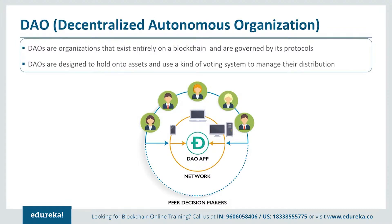DAOs are designed to hold assets and manage their distribution using a voting system. Those who hold major assets have higher priority. Two or more entities within a DAO can interact in a fully decentralized and automated fashion. Each action or vote is represented by a transaction on the blockchain. Members add funds to the DAO and are given tokens to represent their ownership — the more you invest, the more tokens you hold. When the DAO begins to operate, each member proposes how to spend the funds, and based on member votes, the proposal status is decided.